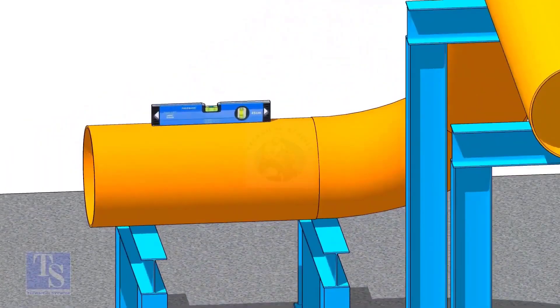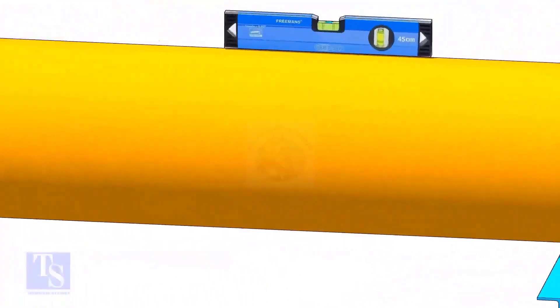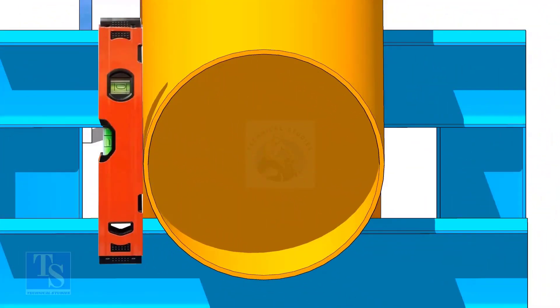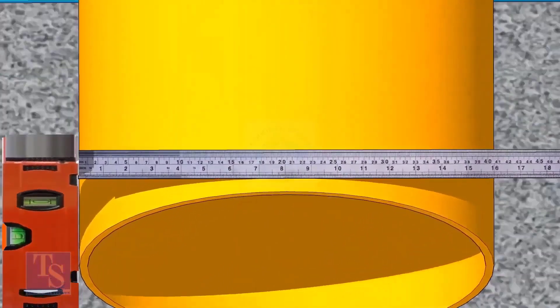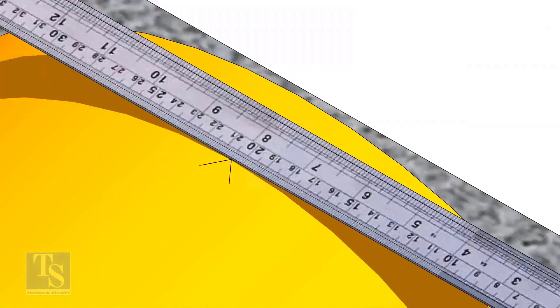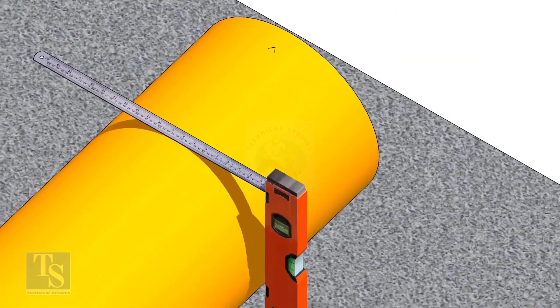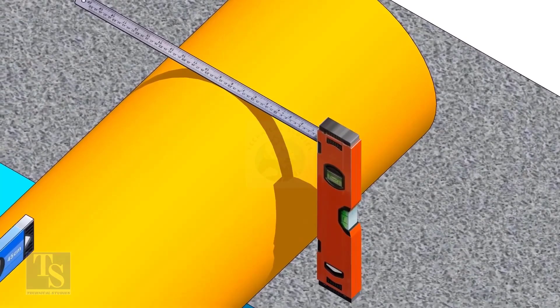After leveling the pipe, mark the center line. Don't forget to punch mark this line. Mark half OD at 300mm apart. This pipe OD is 406mm, so mark 203mm from the vertical level bottle on the top of the pipe, and draw a line connecting these marks.